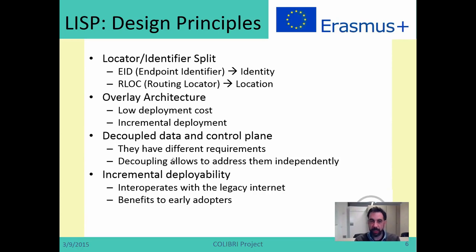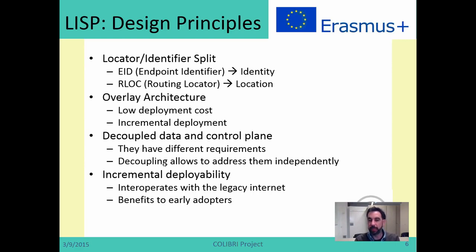Another important aspect of LISP is its decoupled data and control plane. The data plane is responsible for forwarding packets as fast as possible, while the control plane controls how that forwarding is performed. They have different requirements, so LISP decouples them — a principle also common in SDN. Finally, LISP aims for incremental deployability: you don't need a flag day where everybody adopts LISP at once. LISP can interoperate with the legacy internet, so some people can deploy it and receive benefits while others follow at their own pace.